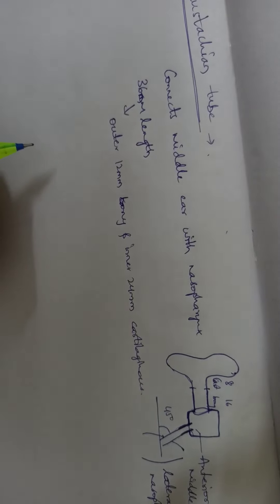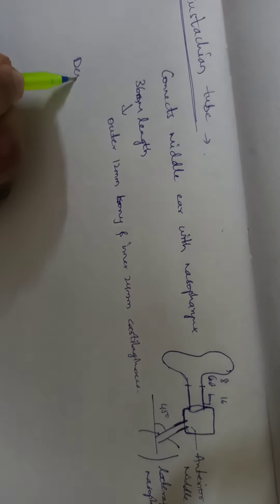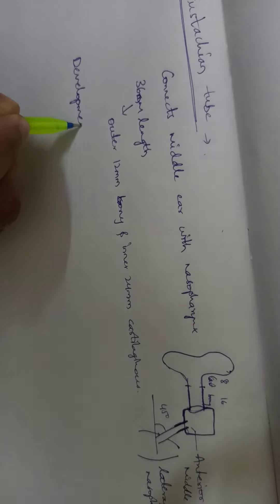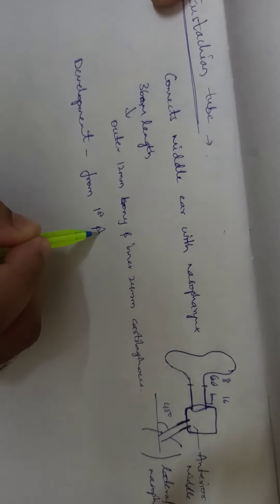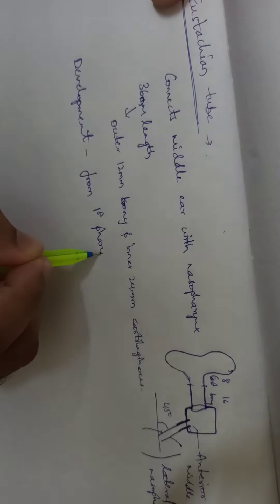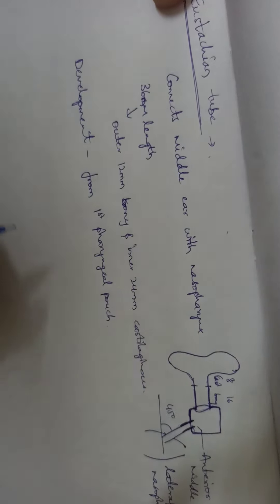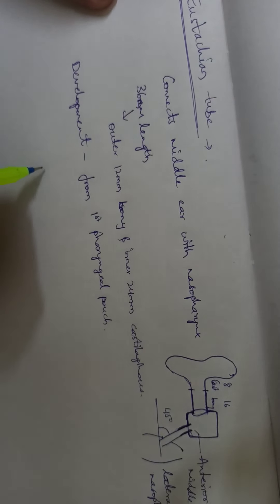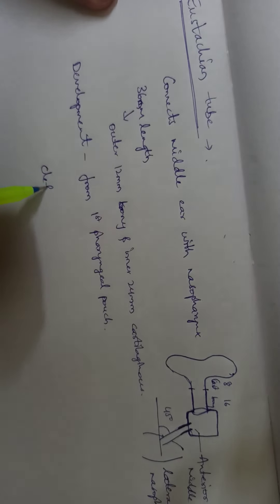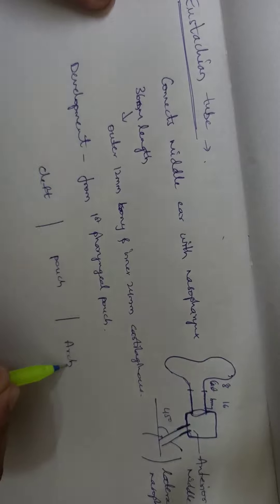Coming to the development of the Eustachian tube, it develops from the first pharyngeal pouch. There is a difference between pharyngeal cleft, pharyngeal pouch, and pharyngeal arch.